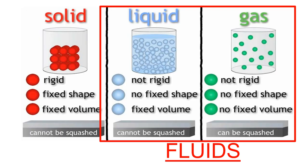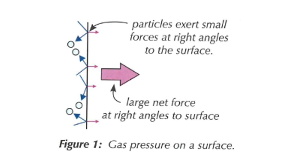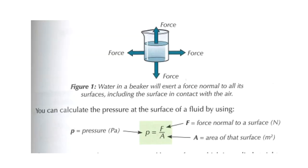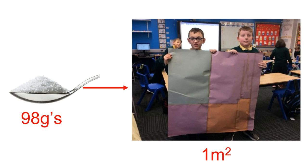Now onto pressure in fluids. In physics, both liquids and gases are considered fluids because their particles can move. Pressure is a force that comes from particles colliding at right angles — at 90° — with the walls of a container. In a solid, particles can't move so there's no such collisions. The equation is: pressure = force ÷ area, and in a fluid the force acts in all directions.